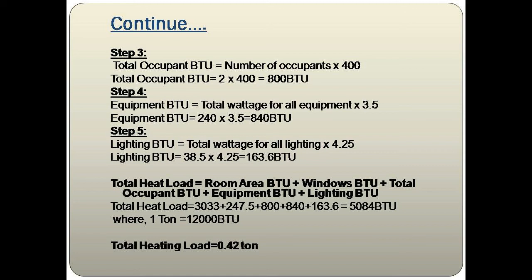Step 4 — Equipment BTU: total wattage for all equipment = 240 W (two computers). 240 × 3.5 = 840 BTU. Step 5 — Lighting BTU: total lighting wattage × 4.25 = 38.5 × 4.25 = 163.6 BTU.